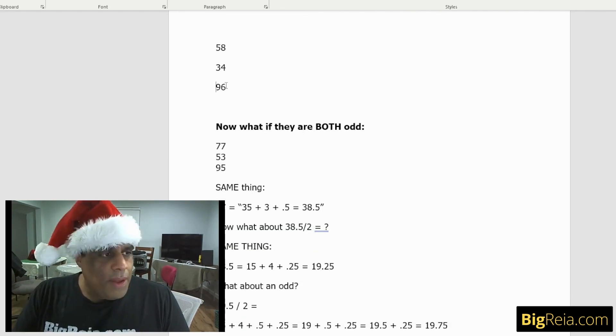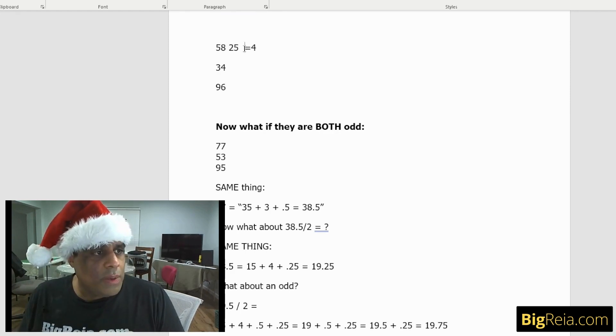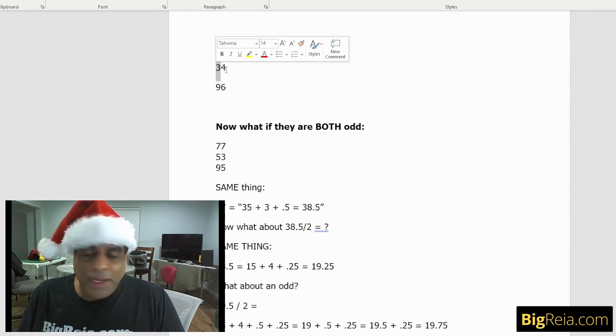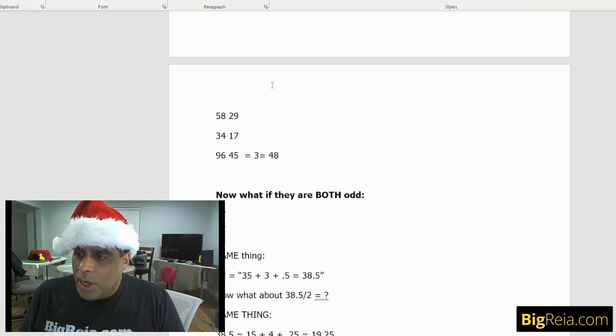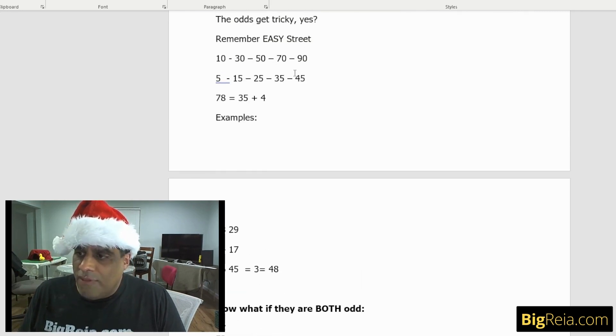Let's do 58, 34, and 96. So 54 is going to be 25 plus four, 29. 34 is going to be 15 plus two, 17. And 96 is going to be 45 plus three, 48. This is our gauge here, 45 plus length. That's how we get to half of these.